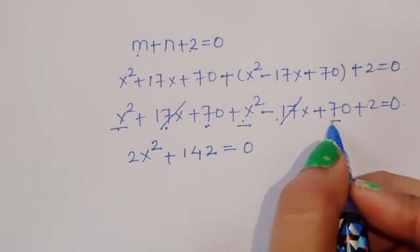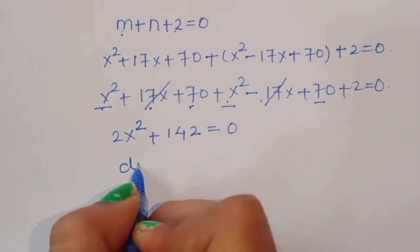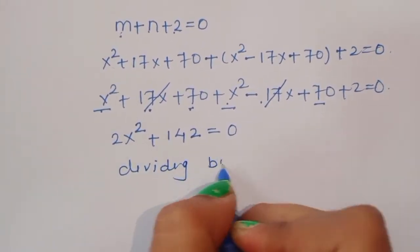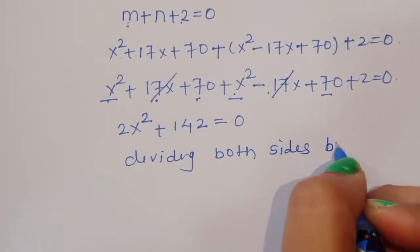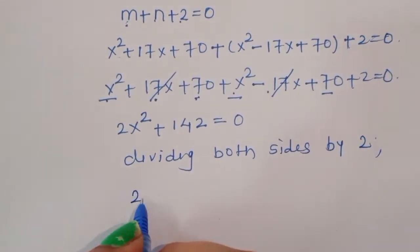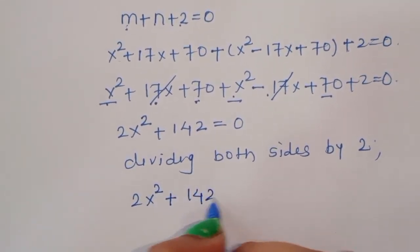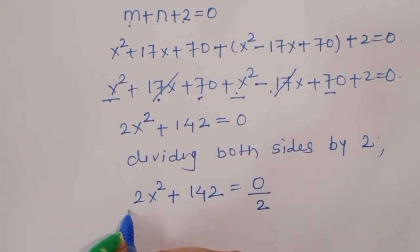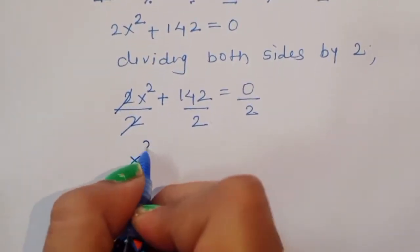Dividing both sides by 2: x² + 71 = 0. This gives x² = -71, which has no real solutions since x is defined to be a real number. Therefore the only valid solution is x = 0.